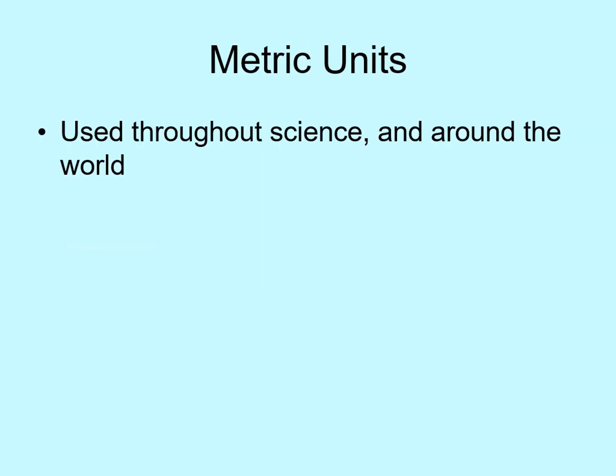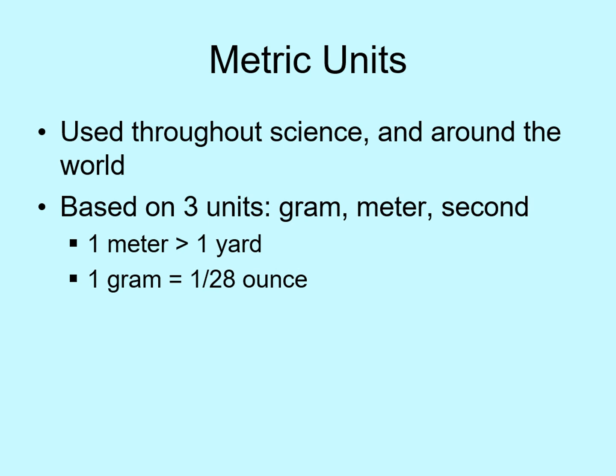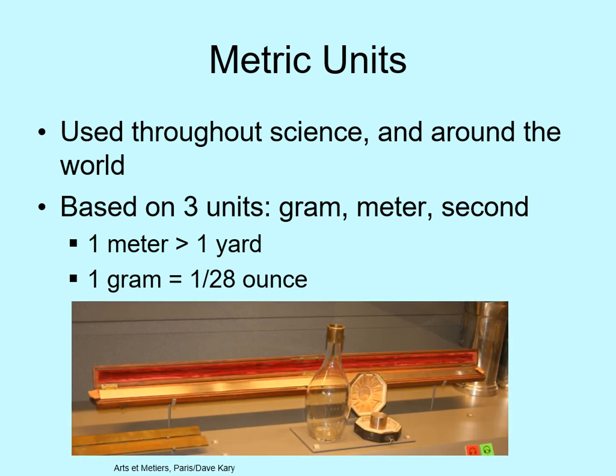In science, and in everyday life outside of the US, the main units we use are from the metric system. The metric system is based on three simple units: grams, meters, and seconds — mass, distance, and time units respectively. A meter is just a little bit more than a yard. A gram is 1/28th of an ounce, really small, and we all know what a second is. The picture shows some of the original standards for metric units. That long metal bar is a meter, the weight in the black case is a kilogram — that's 1,000 grams — and the jar is a liter, but that's a volume unit and we won't be using it in this class.